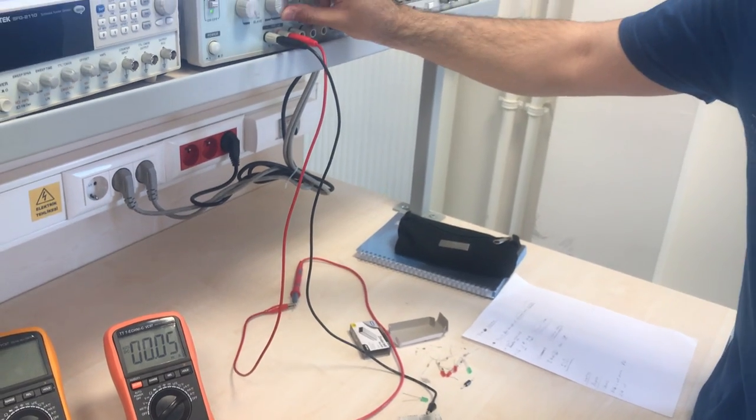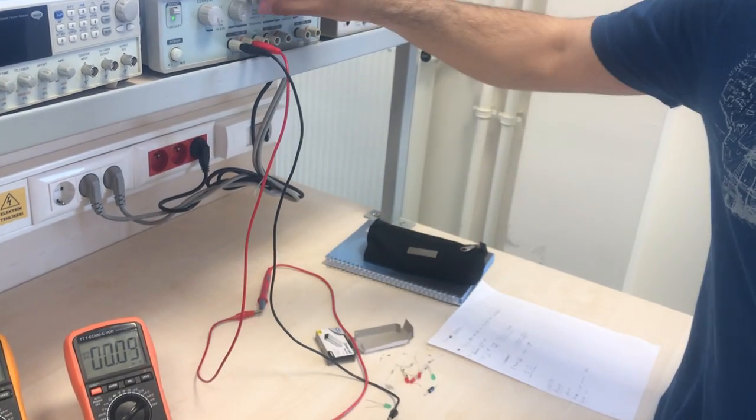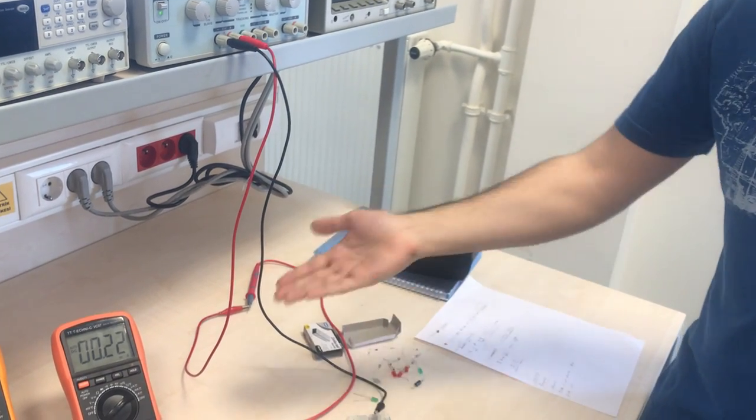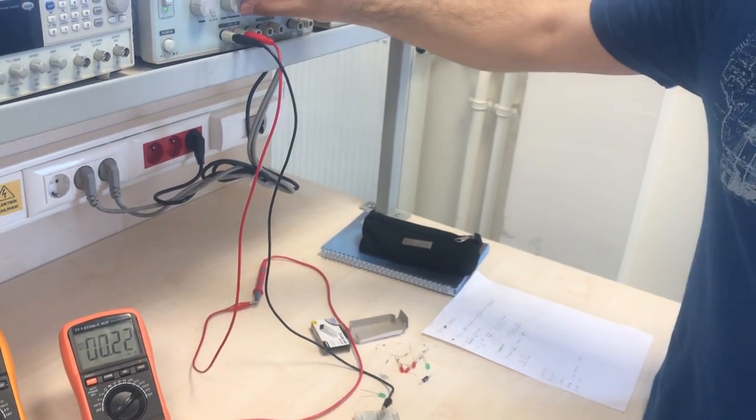And as we expected, it increases. So it's the forward bias diode and it increases when I increase the voltage as I expected.